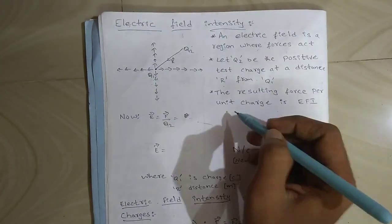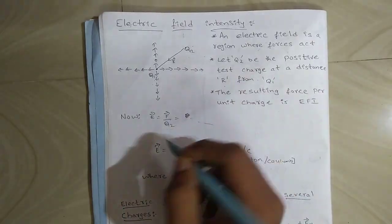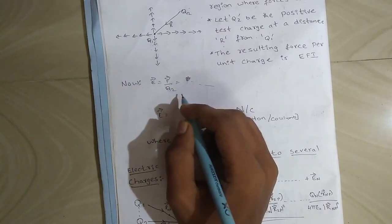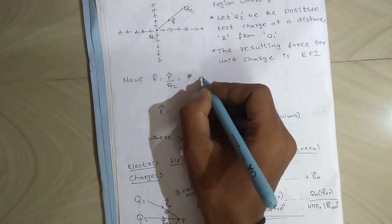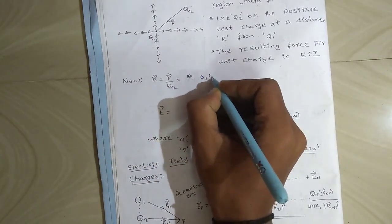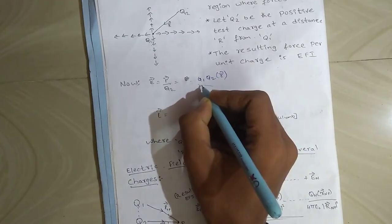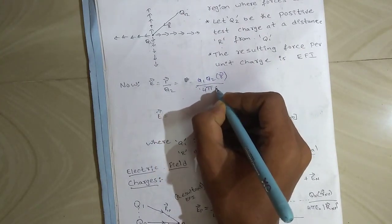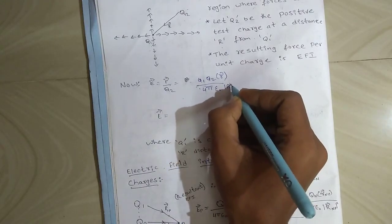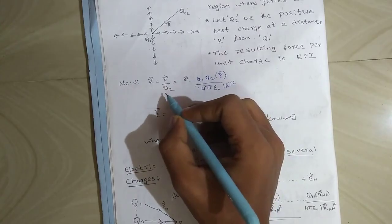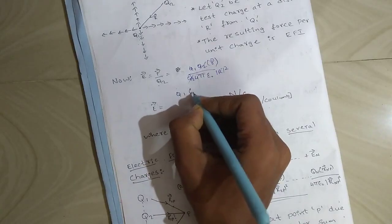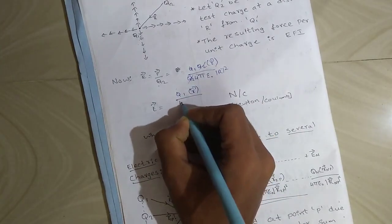The resulting force per unit charge is EFI. To find EFI, we have the formula: force divided by q2. We know the formula of force, that is q1 into q2, unit vector r, divided by 4 pi epsilon naught, magnitude of r squared. We divide it by q2, so q2 gets cancelled. The final formula that remains is q1 times unit vector r divided by 4 pi epsilon naught magnitude of r squared.